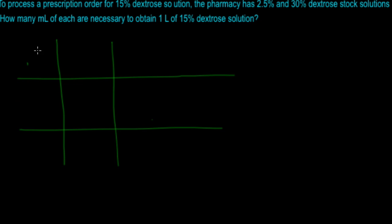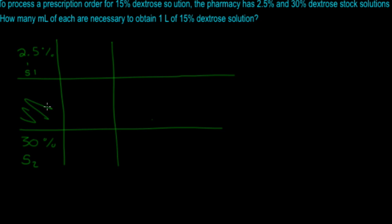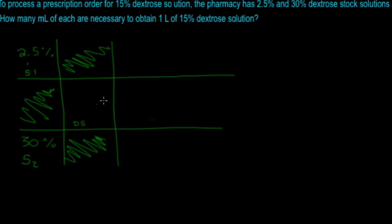In the top left corner you're going to put strength one. You can pick whichever one you want — there's no required order — but I like to pick the first one I see, so that's 2.5%. Down here is strength two, which is your other strength, 30%. The other boxes don't matter. What goes in the center is the desired strength — whatever the doctor prescribes — so that's 15%.